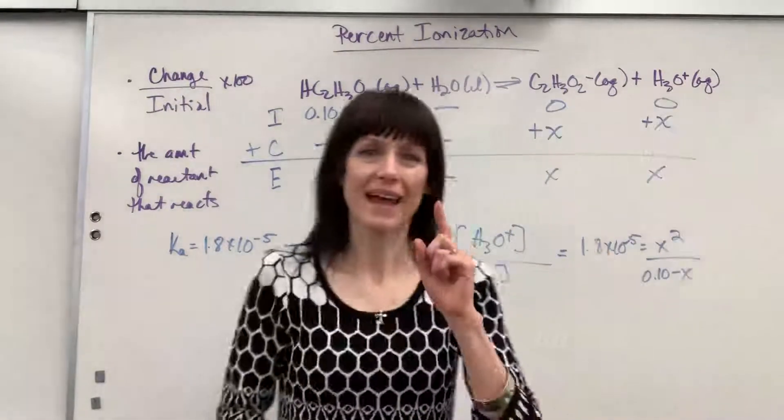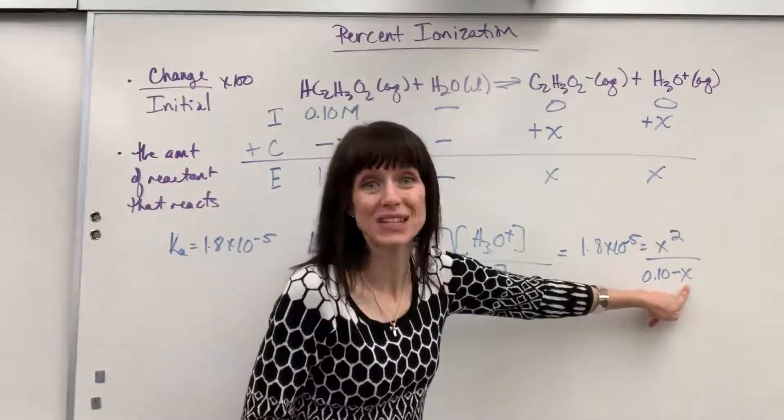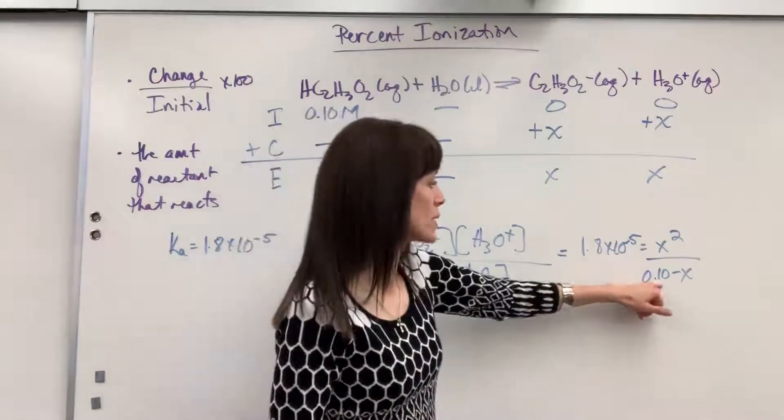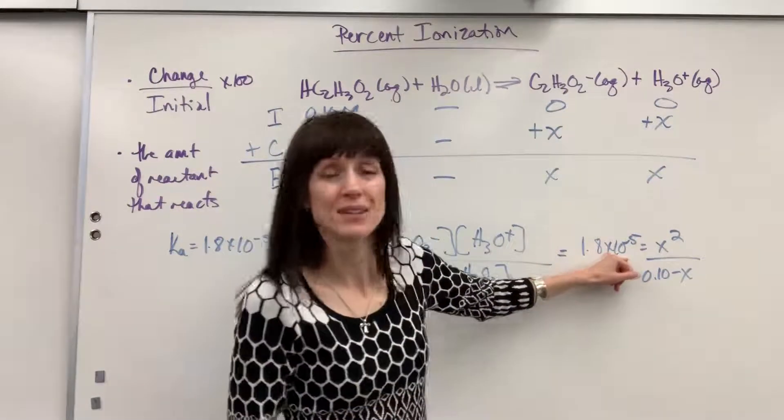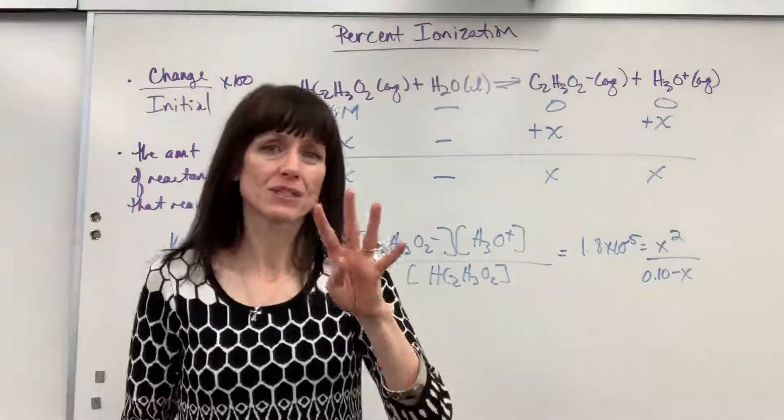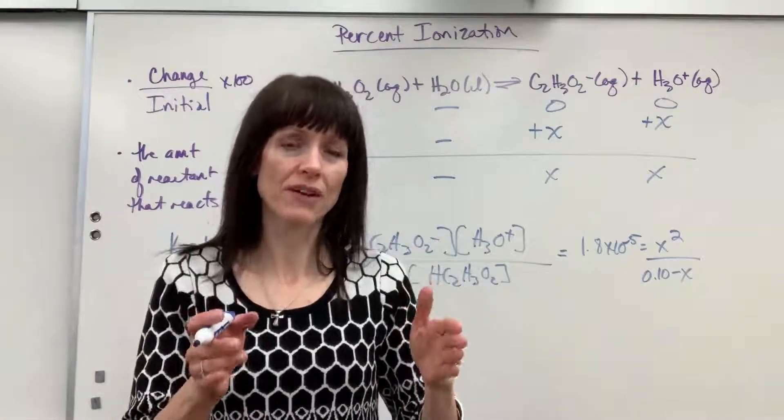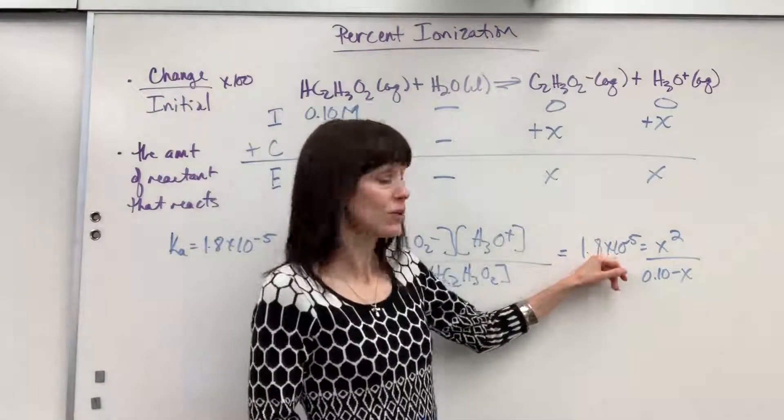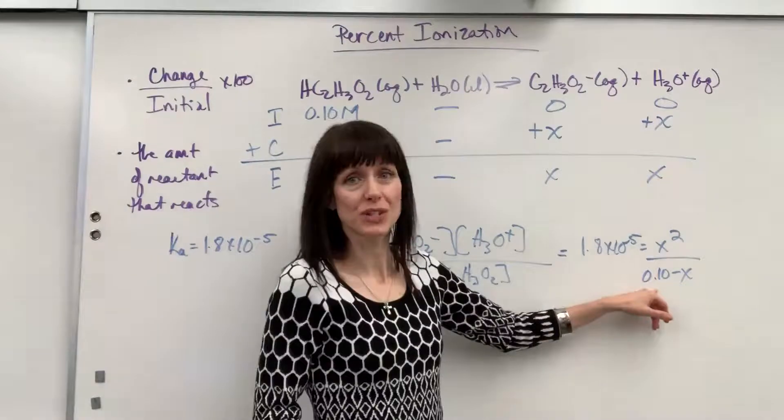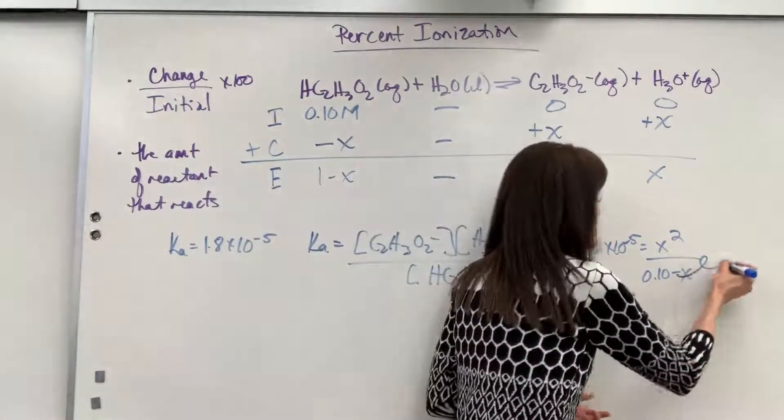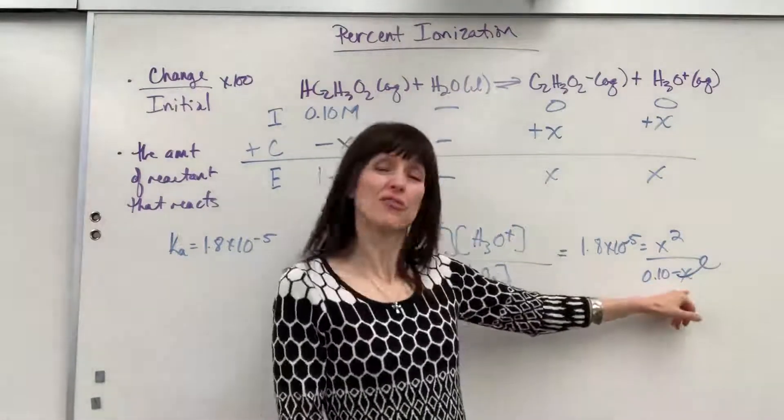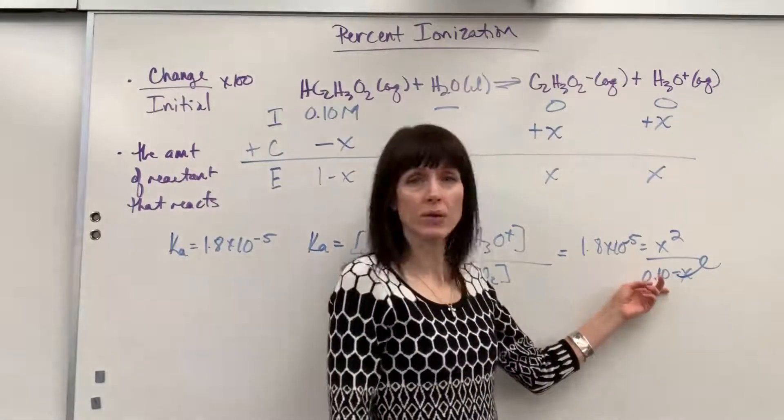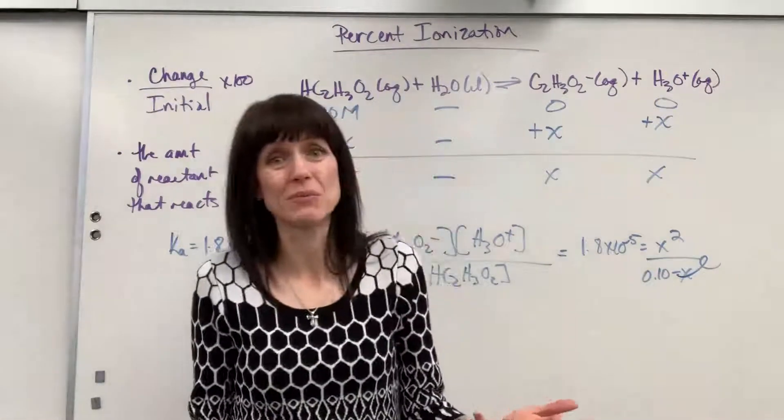Look at the trick. This x is negligible because there's actually four zeros different. This would be 1 times 10 to the minus 1. That's 1.8 times 10 to the minus 5. There's four zeros different. Remember, if there's at least two zeros, a factor of 100 difference between the concentration and the k value, then the x next to the concentration is negligible. Why? It's negligible because when we solve for x and I plug in x, it's so small that when I subtract it from the 0.1 using sig figs, it's actually just going to be 0.1.